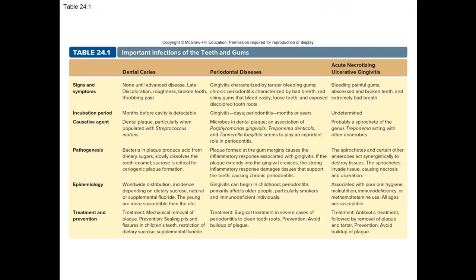This is a good review to do a comparison of dental caries, periodontal disease, and ANUG — that's table 24-1. I encourage you to also go through the micro assessment as well as the case prevention section.